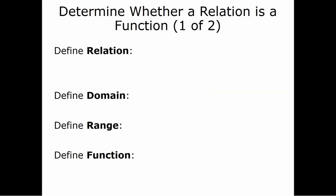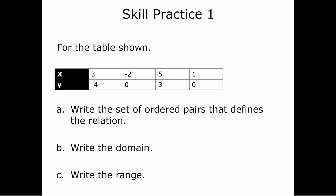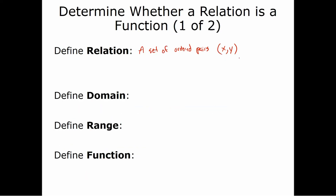We need to define a few things. First, a relation — a relation is basically just a set of ordered pairs. We'll call the ordered pairs x and y, which means we have a relation in x and y. The domain of a relation is just the set of all x values, and the range is just the set of all y values.